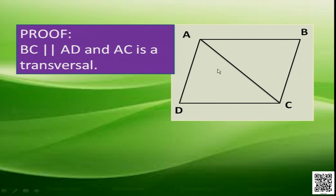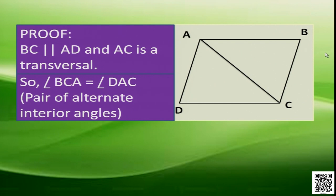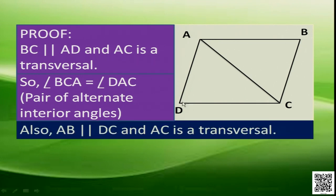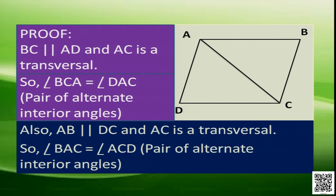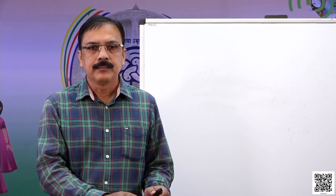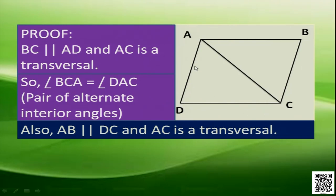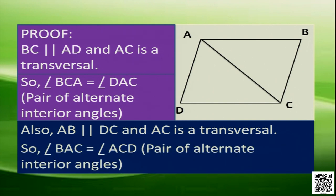Also, AB is parallel to CD and AC is the transversal. So angle BAC is equal to angle ACD — this is also due to the pair of alternate interior angles. Now, in triangles ABC and CDA, we have angle BCA equal to angle DAC, angle BAC equal to angle ACD, and side AC is common to both of them. So these two triangles are congruent by ASA — Angle-Side-Angle congruency. Thus we have proved the theorem as required.